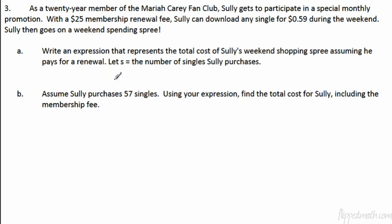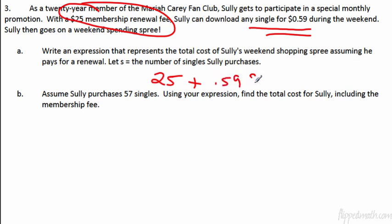Number 3. This is about practicing writing your expressions. So most of these start with an initial value, which is the membership fee, $25. And you can download any single Mariah Carey here, 59 cents during the weekend. So it says write an expression that represents the total cost. The total cost would be 25 plus each song that he downloads. So 59 times each song. Each single. There you go. That's the expression. Assume Sully purchases 57 singles. You're going to plug that right into the S and you can solve that problem.